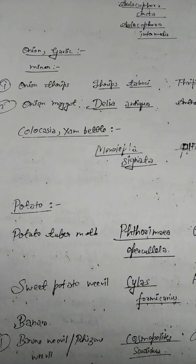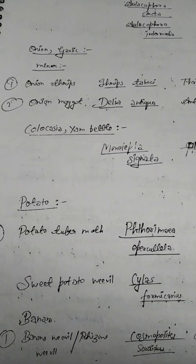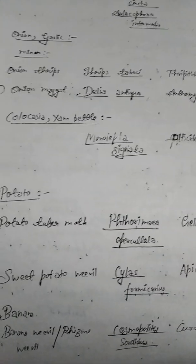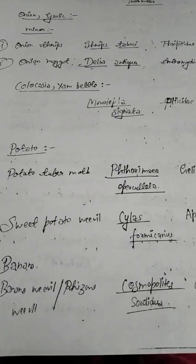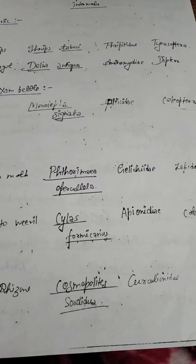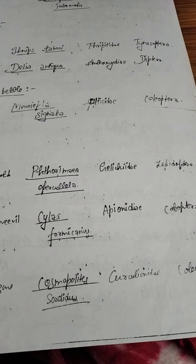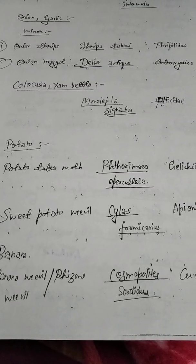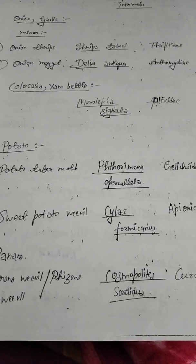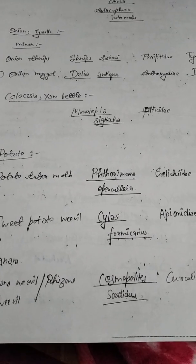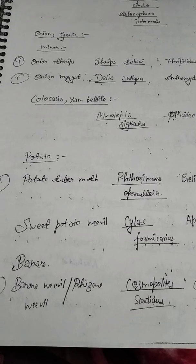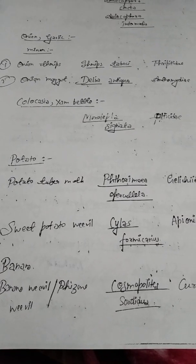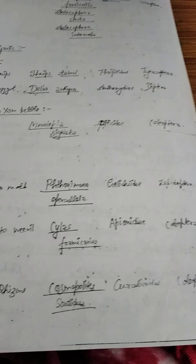Colocasia yam beetle is Monolepta signata — this is not very important. But here is potato tuber moth, which is very important. Potato tuber moth is Phthorimaea operculella, family Gelechiidae, order Lepidoptera. Sometimes they ask the family also, so remember Gelechiidae. Sweet potato weevil is Cylas formicarius, family Brentidae. And for banana, banana weevil is Cosmopolites sordidus, family Curculionidae, order Coleoptera.